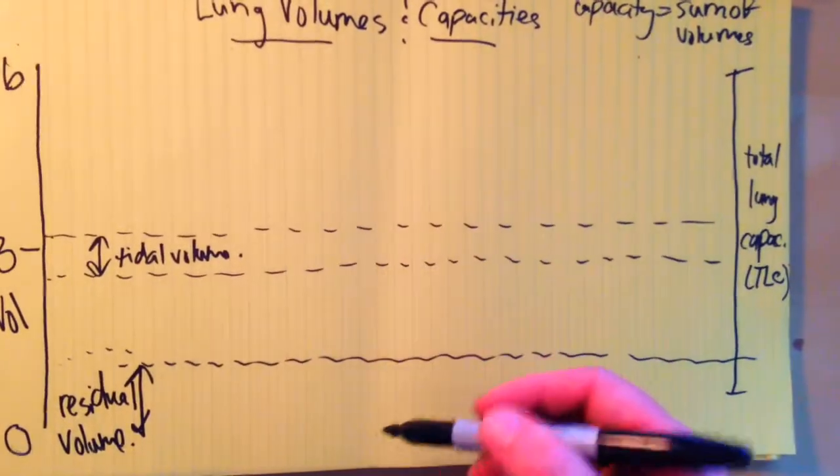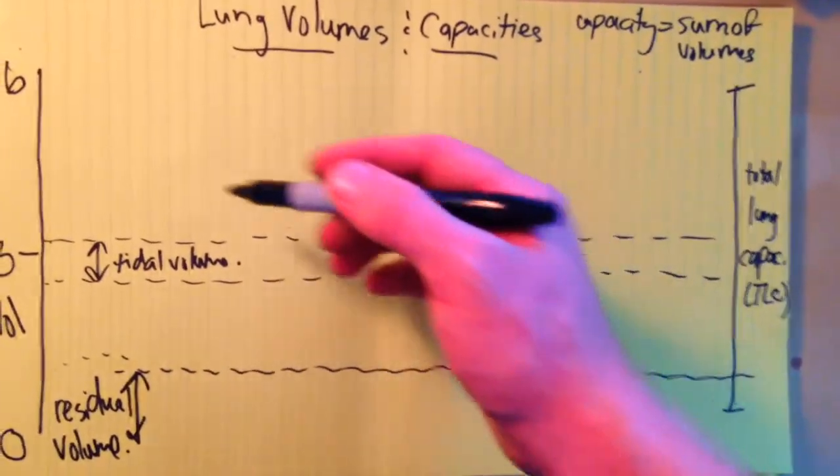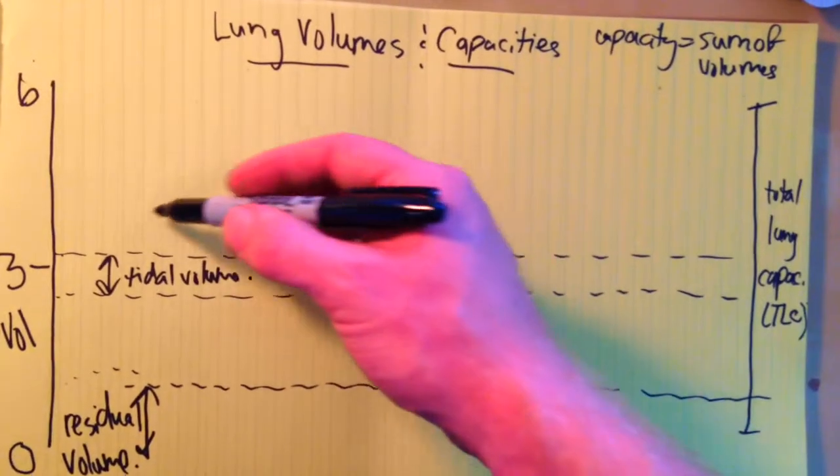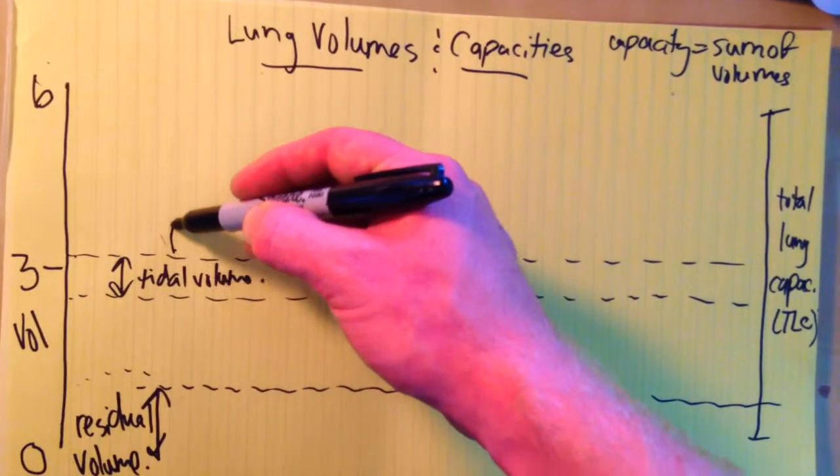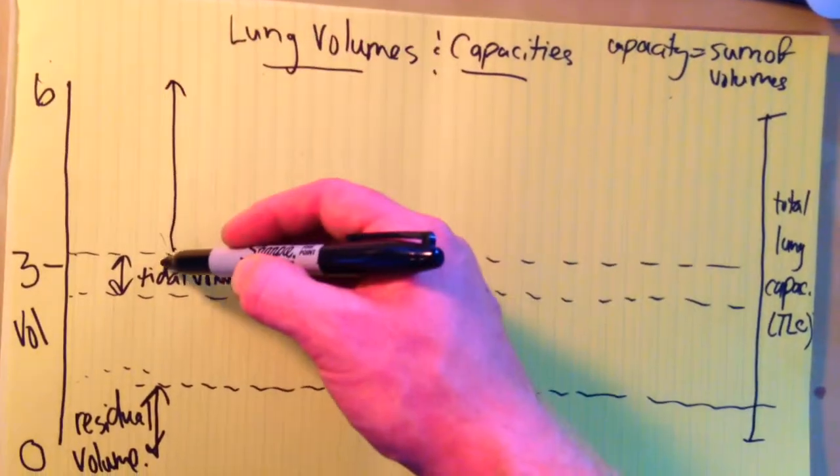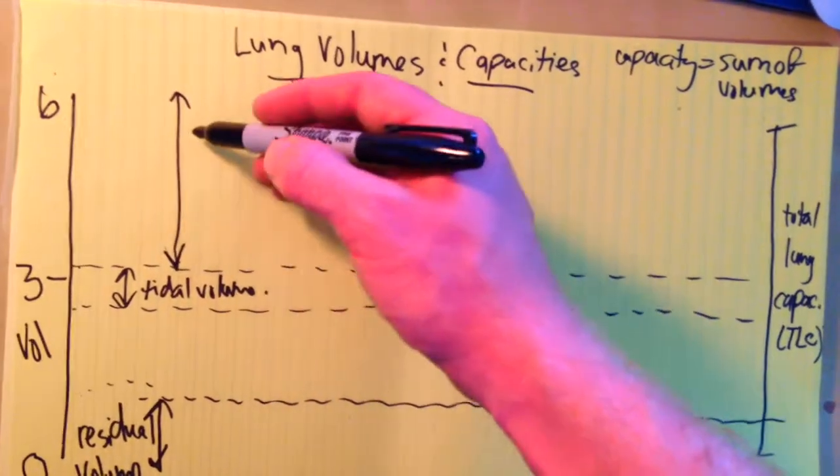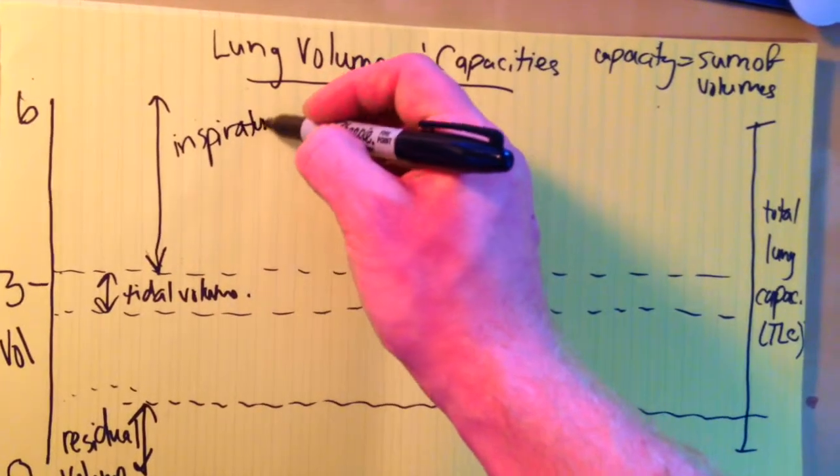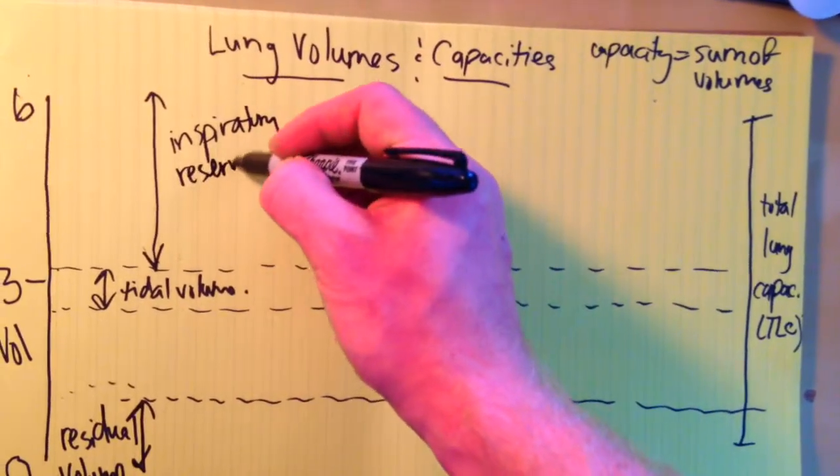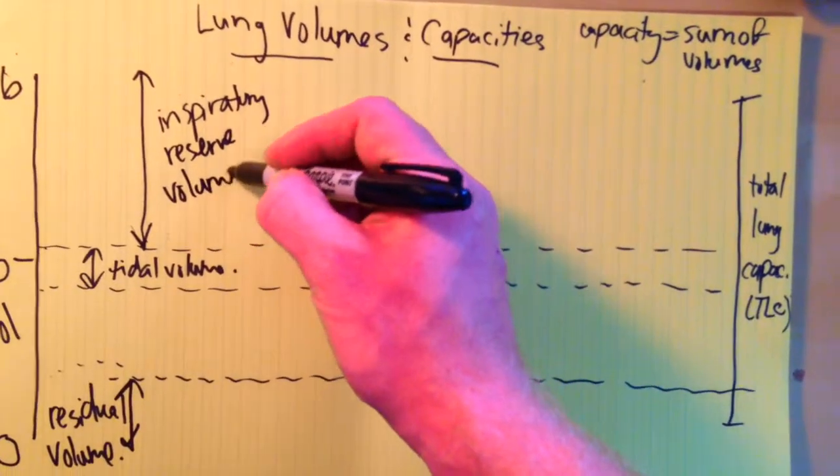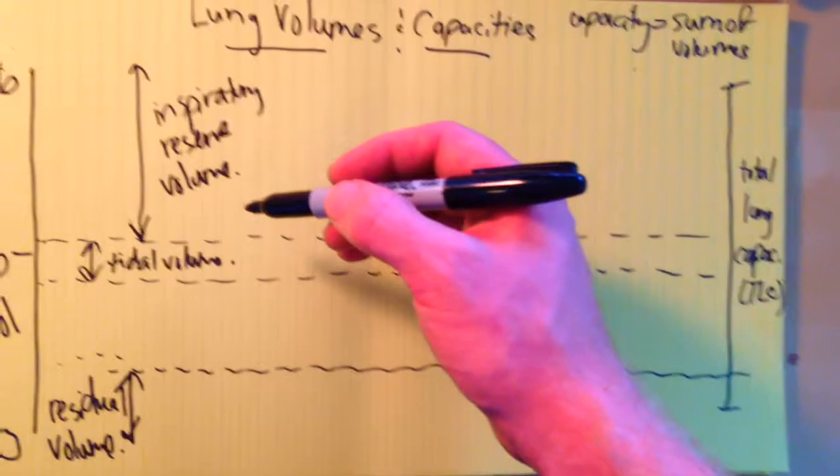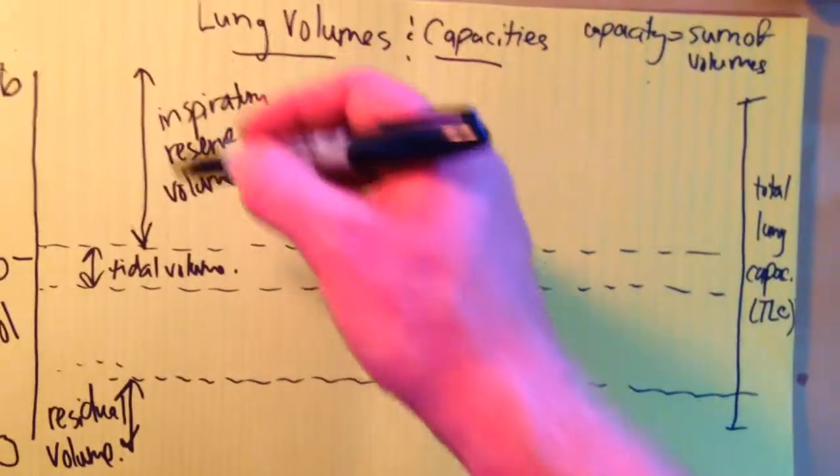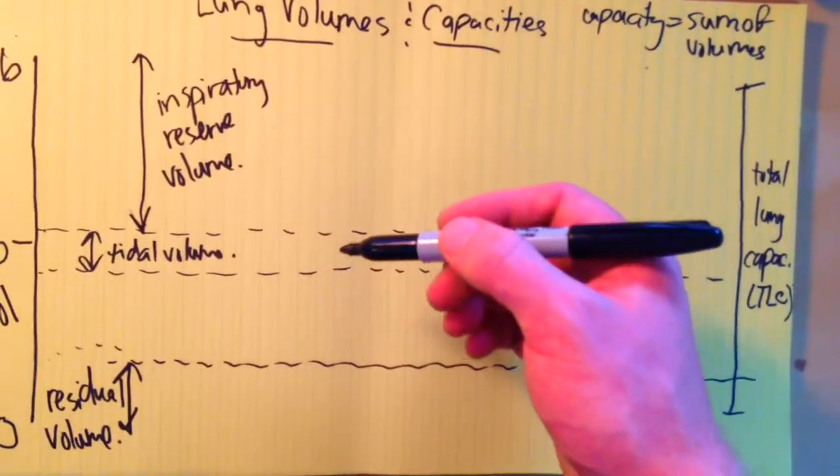But how do we fill in all this other stuff? So why don't we think first, if you're not taking a passive breath, if you breathe in as deep as you possibly can from the end of your inspiration. The volume between the tidal volume and the total lung capacity is called your inspiratory reserve volume. As you can see there's nothing you can add to this, so it's a volume. It has to be a volume because you can't make a capacity out of it because there's no other smaller piece of it that you can add to it to make it a capacity.